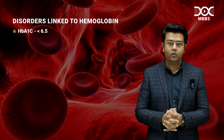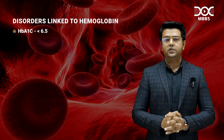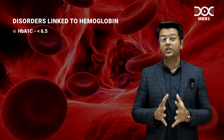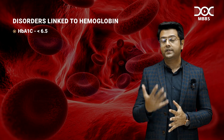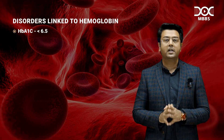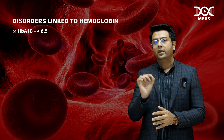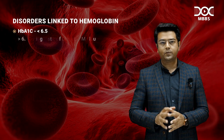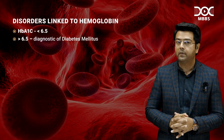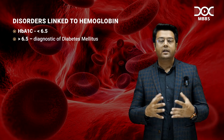Now let's talk about another type of hemoglobin called HbA1C. HbA1C is a type of hemoglobin that is normally present in people, but its level should be less than 6.5%. If it is more than 6.5%, it is diagnostic of diabetes mellitus.